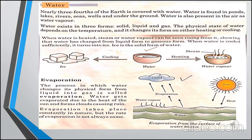زمین کا three-fourth area water سے cover ہے اور one-fourth پر آبادی ہے۔ Water مختلف forms میں موجود ہے جیسے ponds، lakes، rivers، seas، wells، oceans، underground water، اور water vapors بھی۔ Water تینوں states میں پایا جاتا ہے: solid form جیسے glaciers اور snowfall والے mountains، liquid form جیسے rain اور water drops، اور gaseous form جیسے water vapors۔